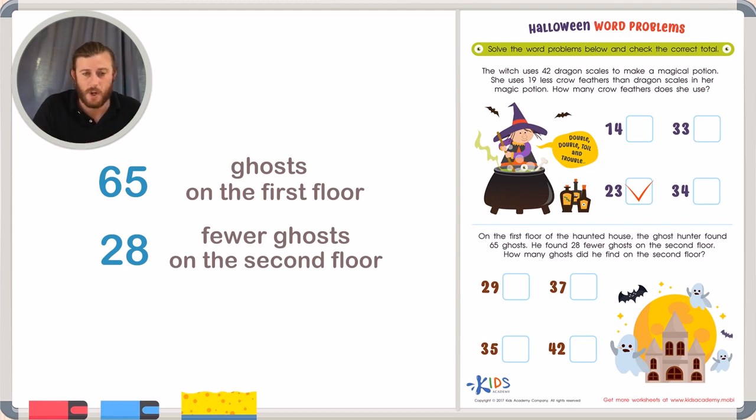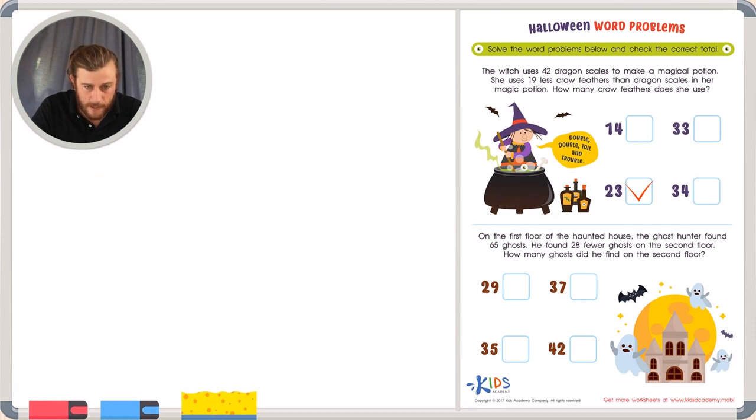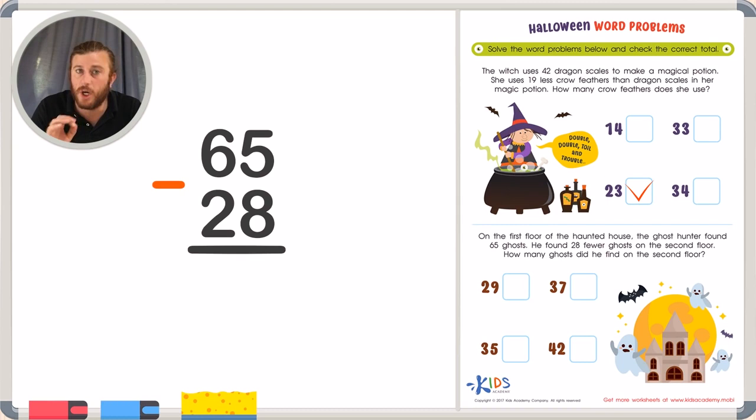28 fewer ghosts, we're going to have to subtract. 65 minus 28 to find out how many ghosts there were on the second floor. Because there was 28 fewer ghosts or 28 less ghosts on the second floor. So again, let's subtract with regrouping.